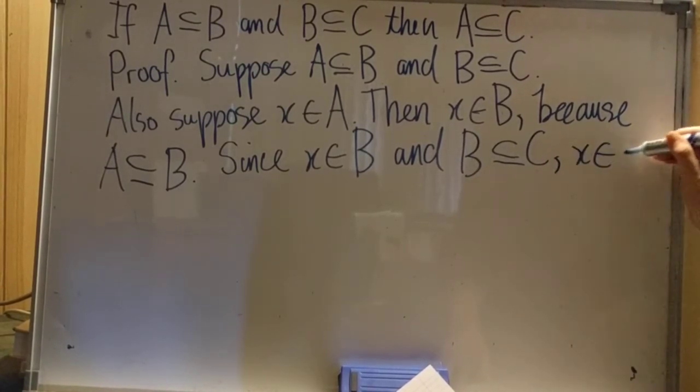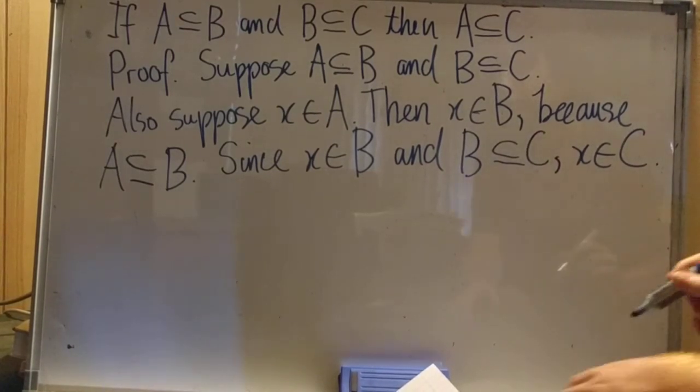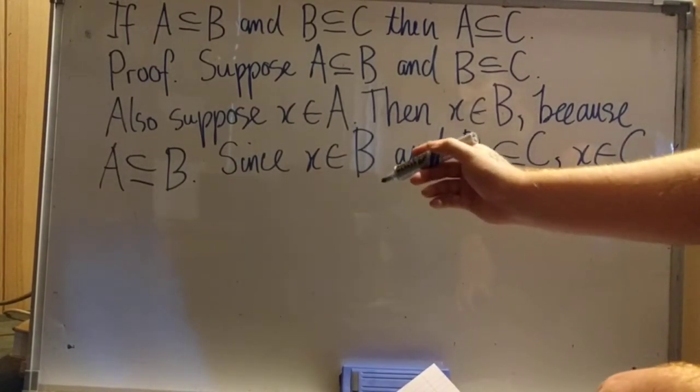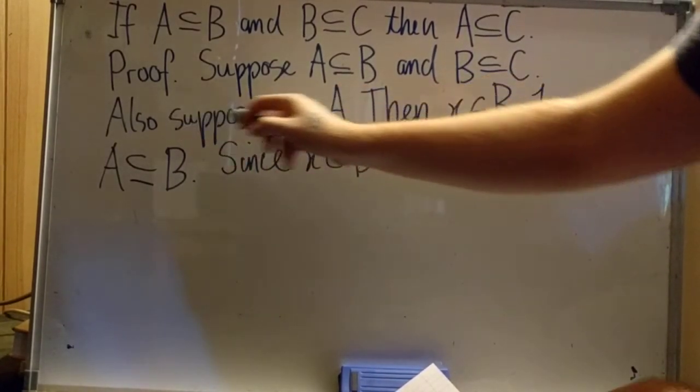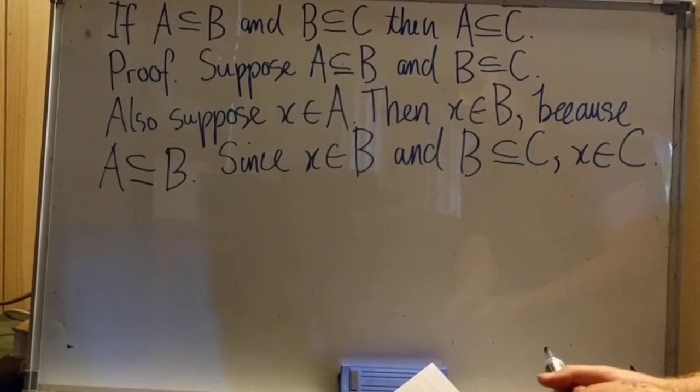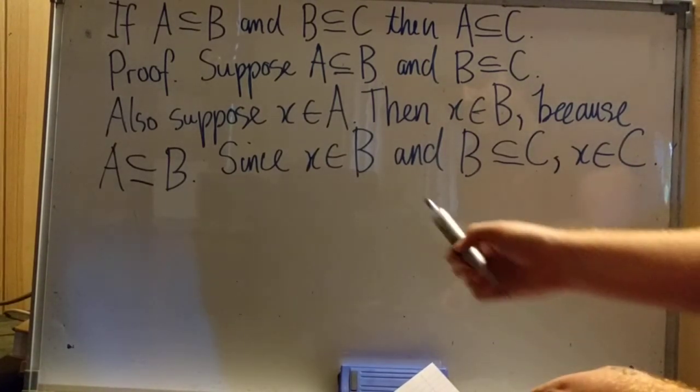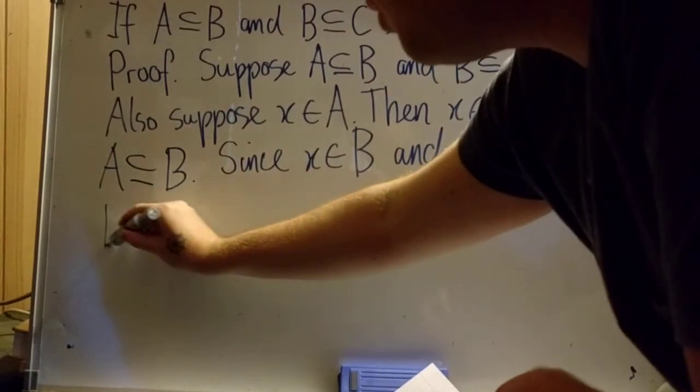X is an element of C. So all we've shown here is that for an arbitrarily chosen X, if X is an element of A, then X is an element of C. That's the end of our proof.